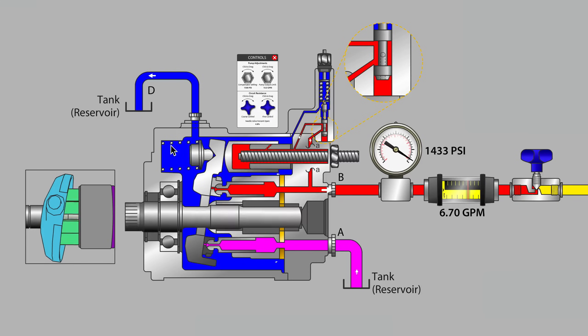So inside of a piston pump with all of the moving pieces there are clearances, for instance between the piston and the cylinder in the cylinder barrel, and remember there's seven or nine of those so there's clearances there.